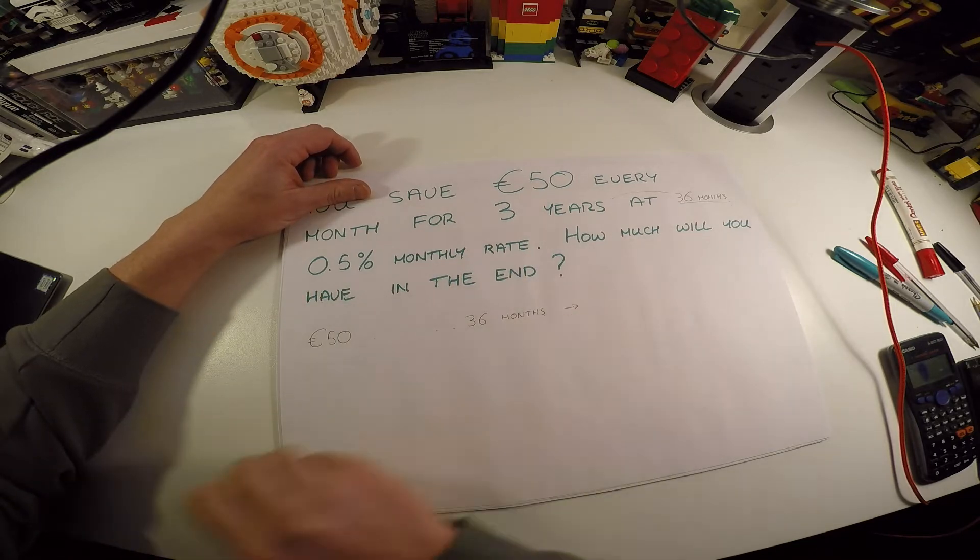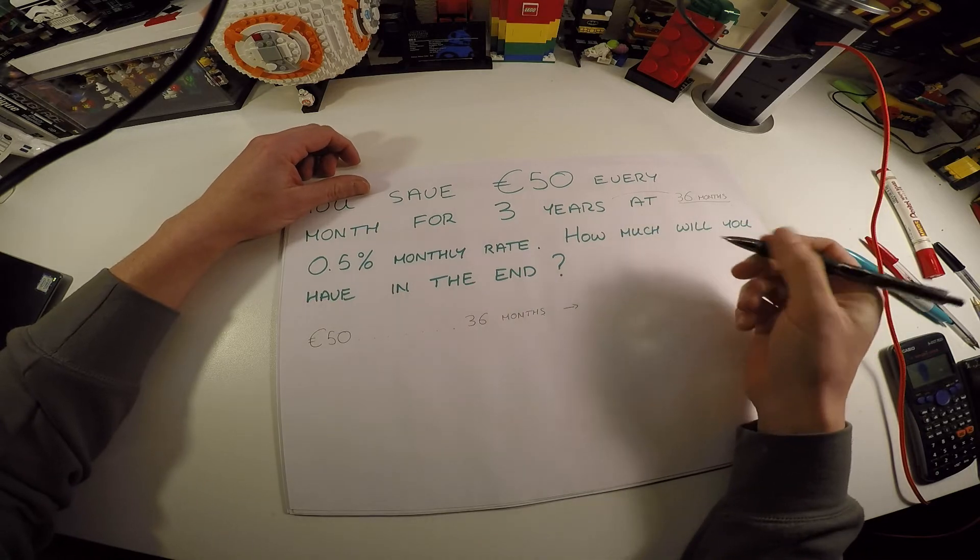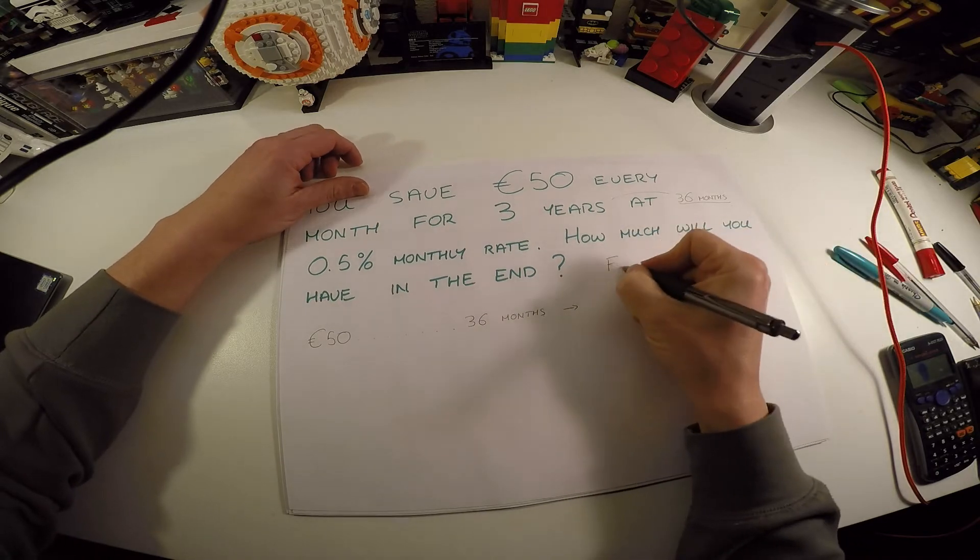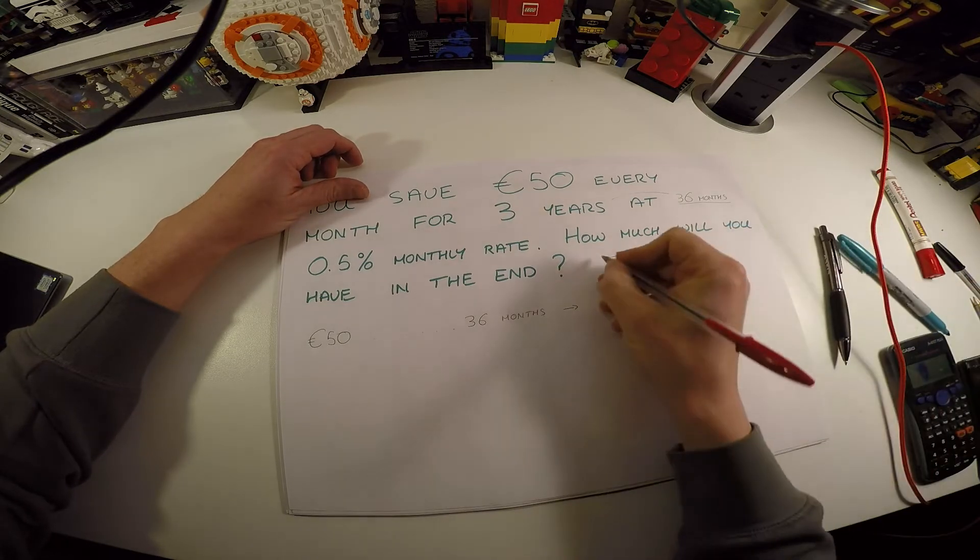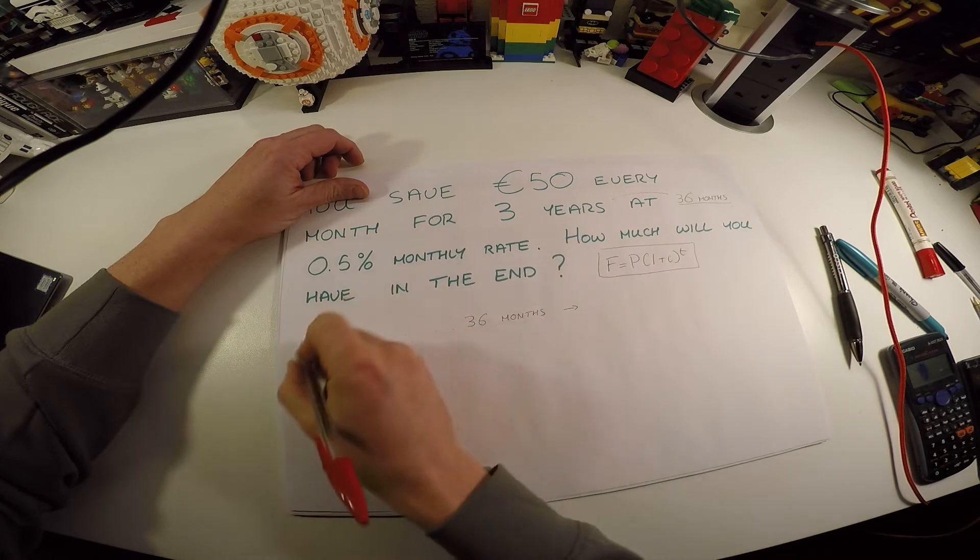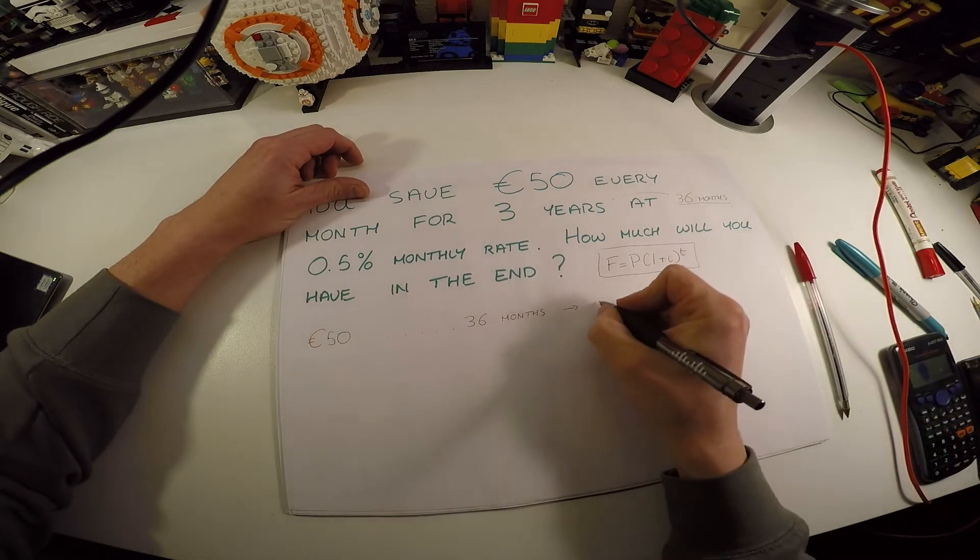If we just thought about this one, we could say that we can use the simple compound interest formula for that. That's the standard financial maths formula, which is F equals P times (1 plus i) to the t. We can use this for every single packet of money that goes in.